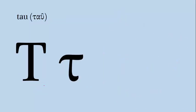Next we have Tau, which makes a T sound like the letter T in English as in 'tiny.' To draw Tau it's pretty easy — an uppercase Tau just looks like an uppercase T. For a lowercase Tau, we draw a smaller uppercase T, and you can draw a little curl on the bottom. An example of a Greek word with Tau is the word 'teknon,' which means 'child.'